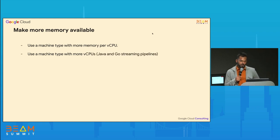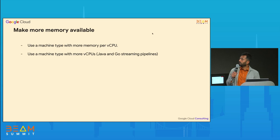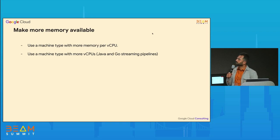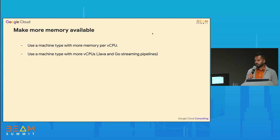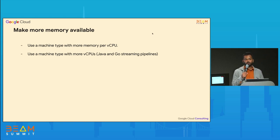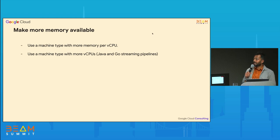The second option is to select a machine type with more vCPUs. This is not applicable for Python Beam jobs. For Java and Go pipelines, you have one SDK process per worker, and if you increase the number of vCPUs on the worker, those vCPUs also come with more memory capacity, so you end up with more memory available for each SDK process.